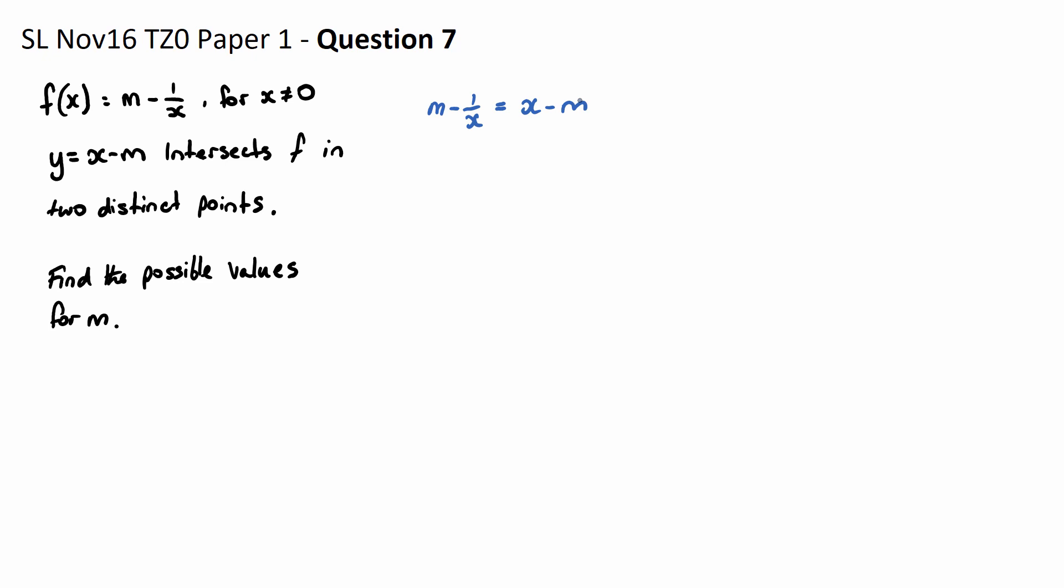Now we're going to create an equation here and it's most likely going to be a quadratic. Let's multiply every term by x to get this x off the bottom line, and we're going to get mx minus 1 equals x squared minus mx.